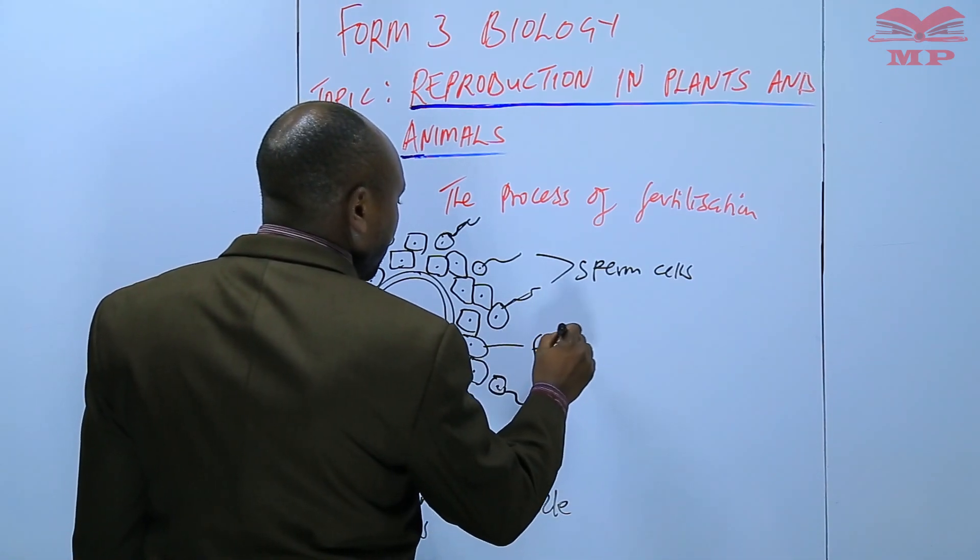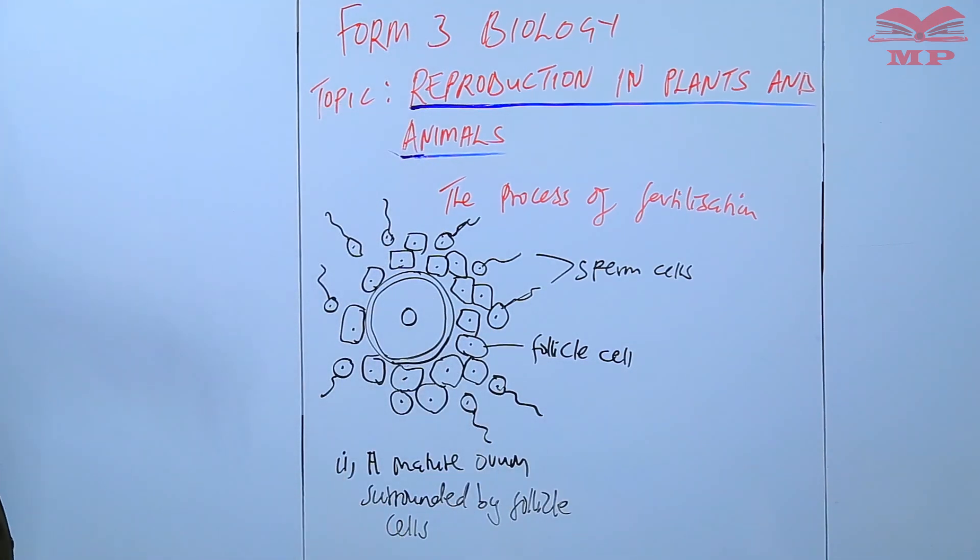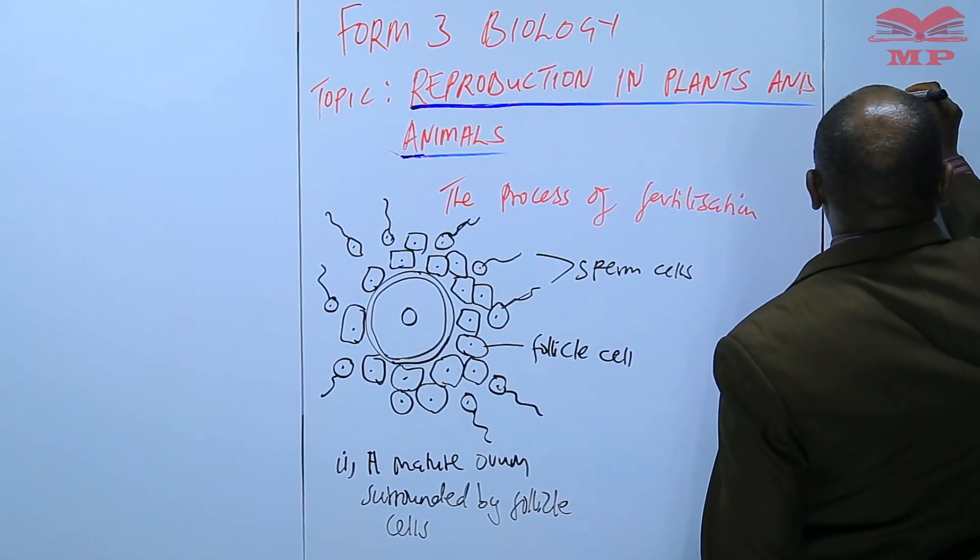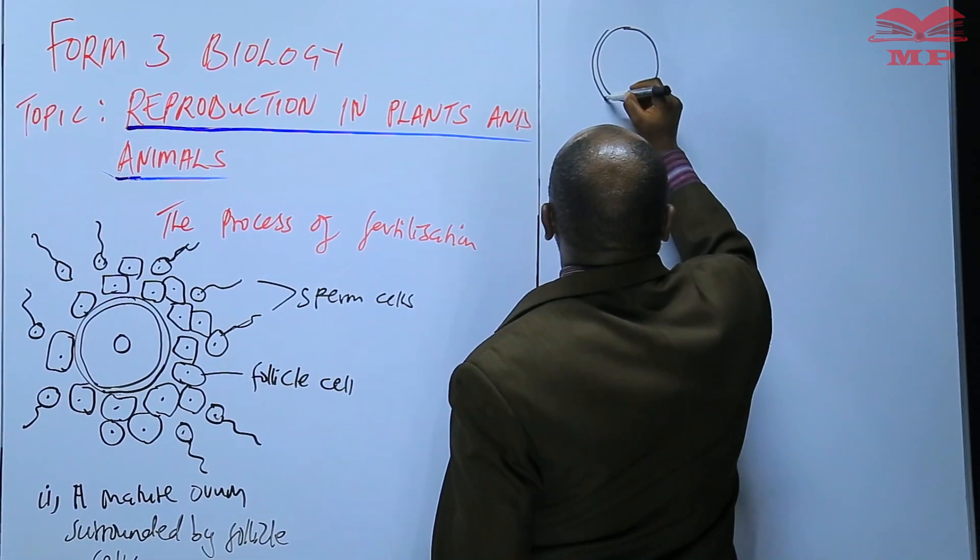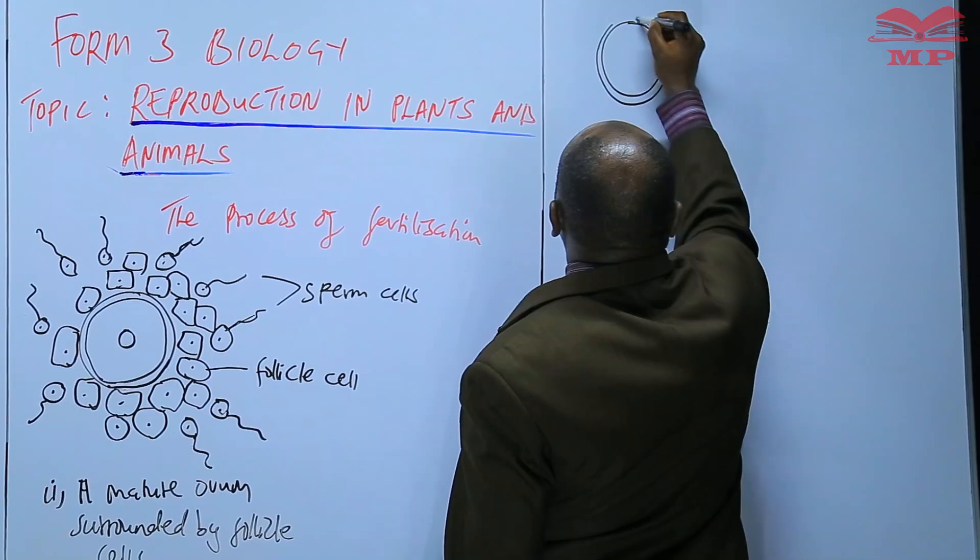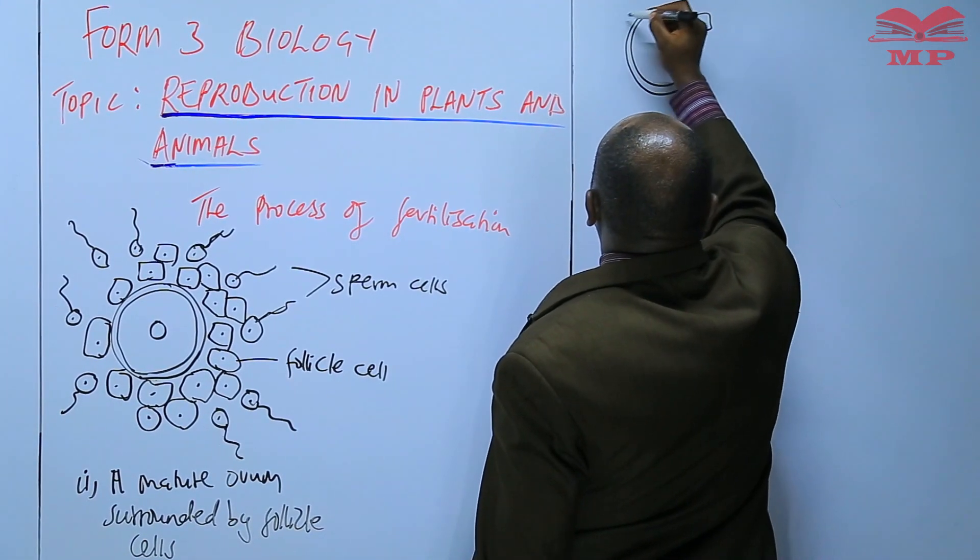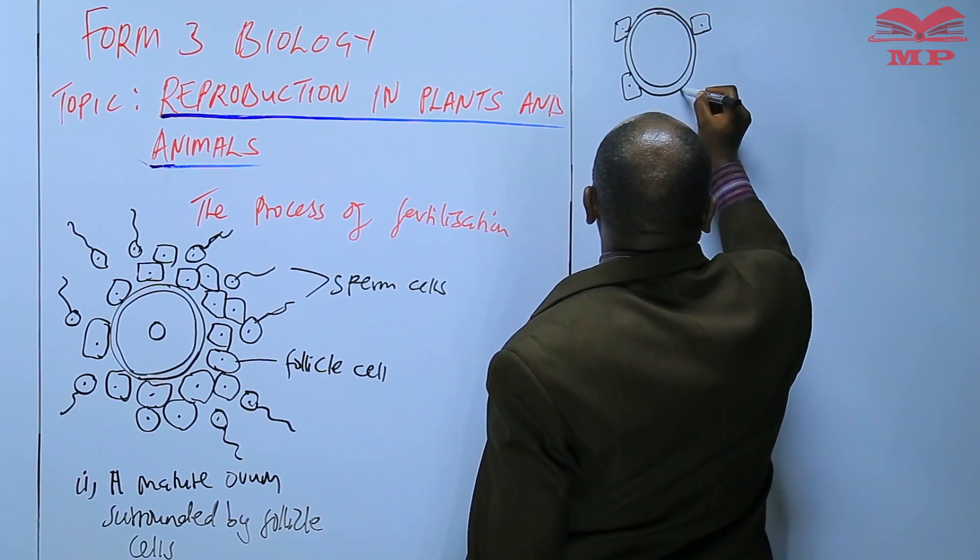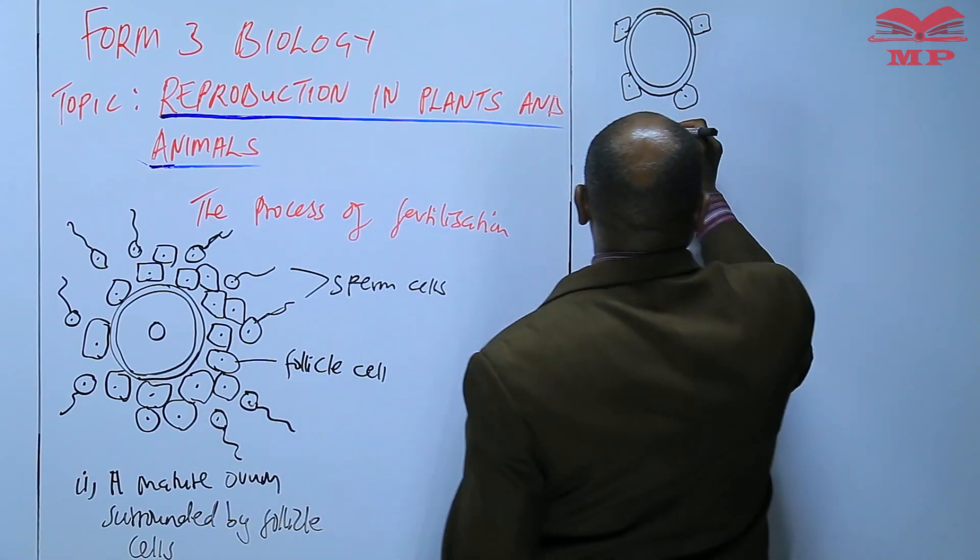These are follicle cells. And of course, we have the ovum. At number two, most of the follicle cells have been scattered.